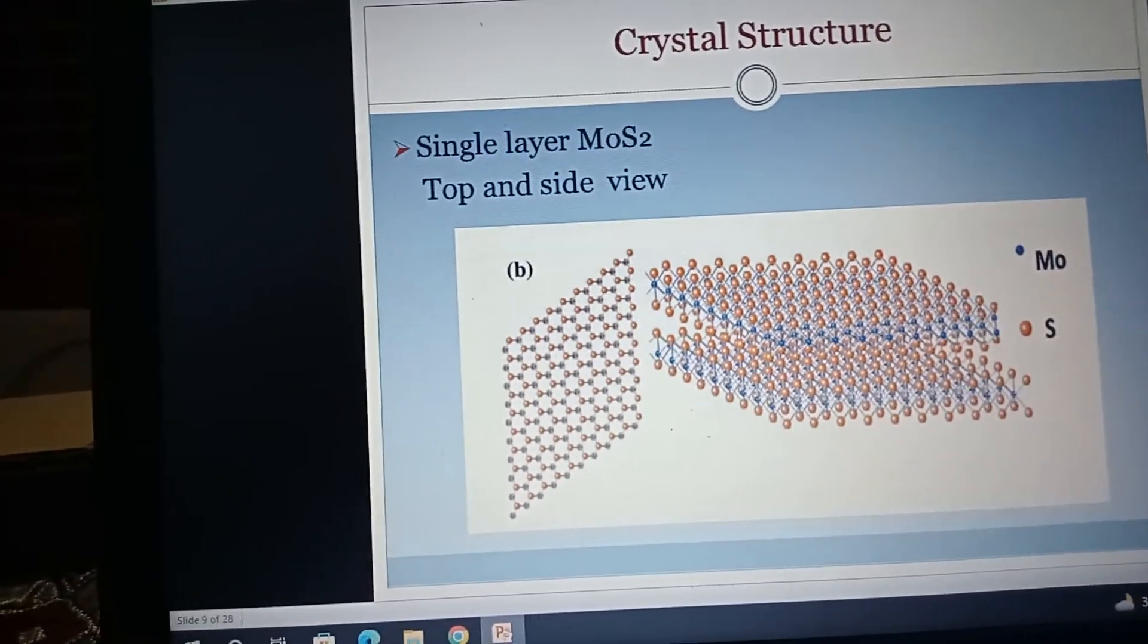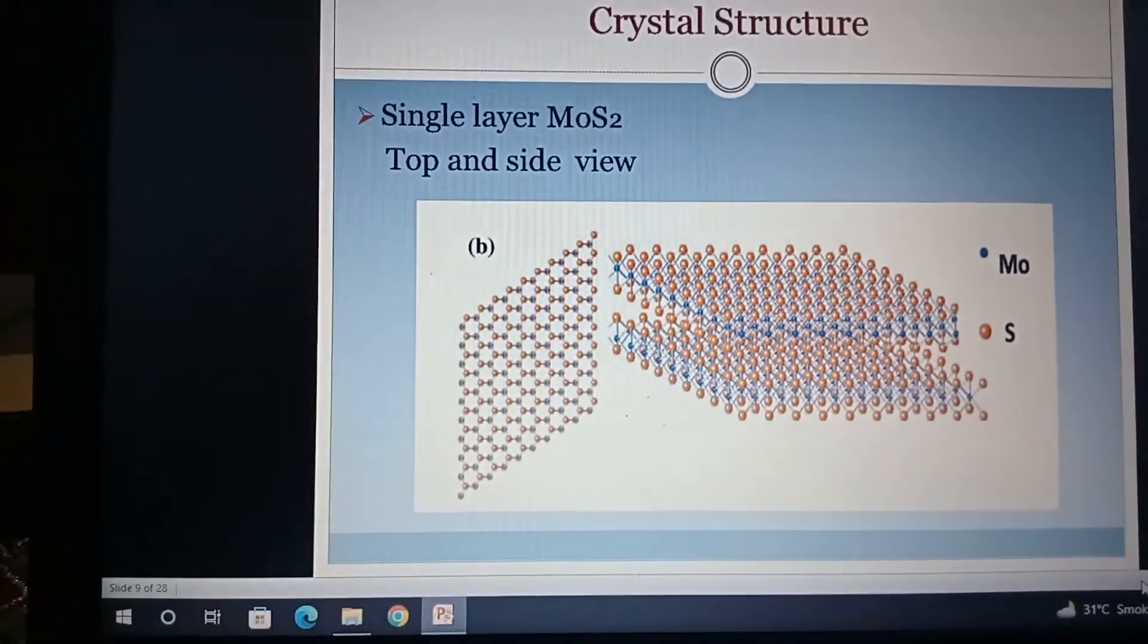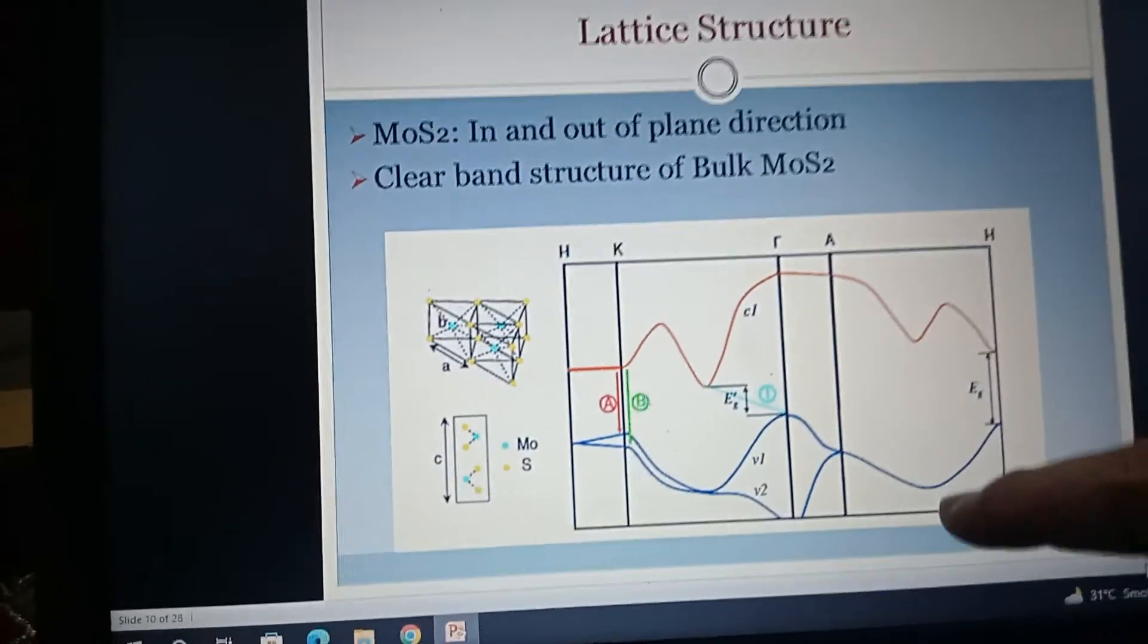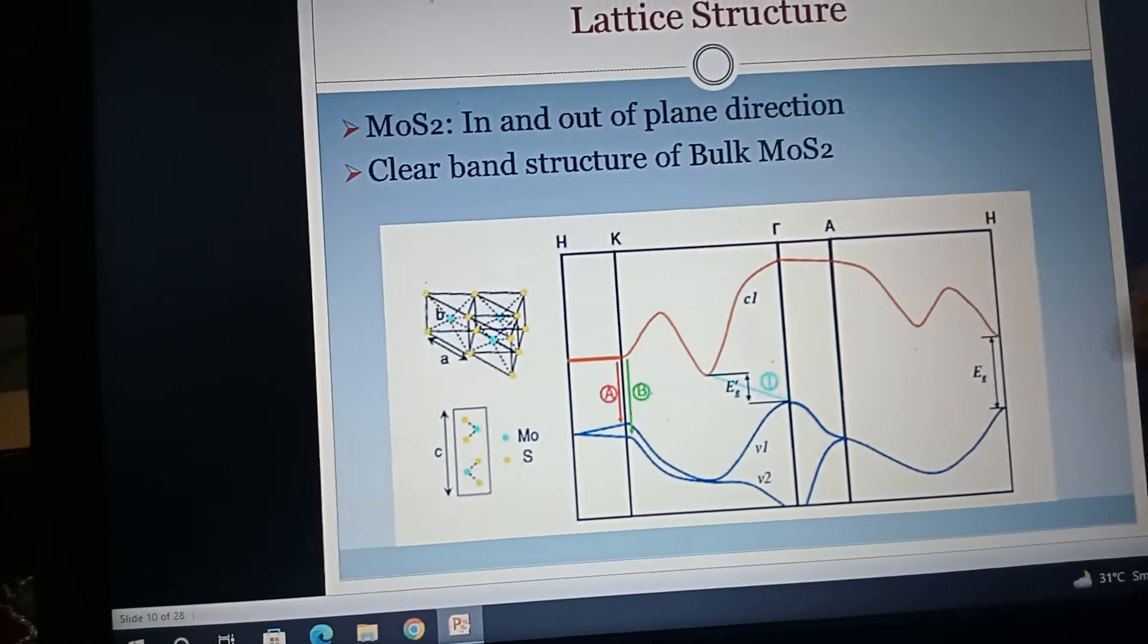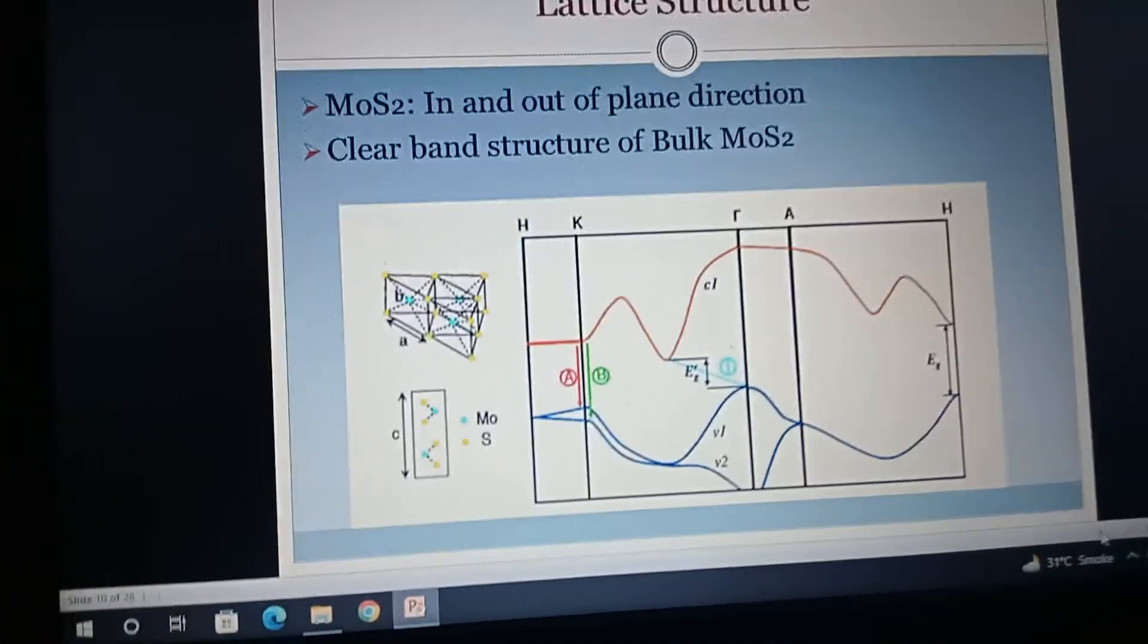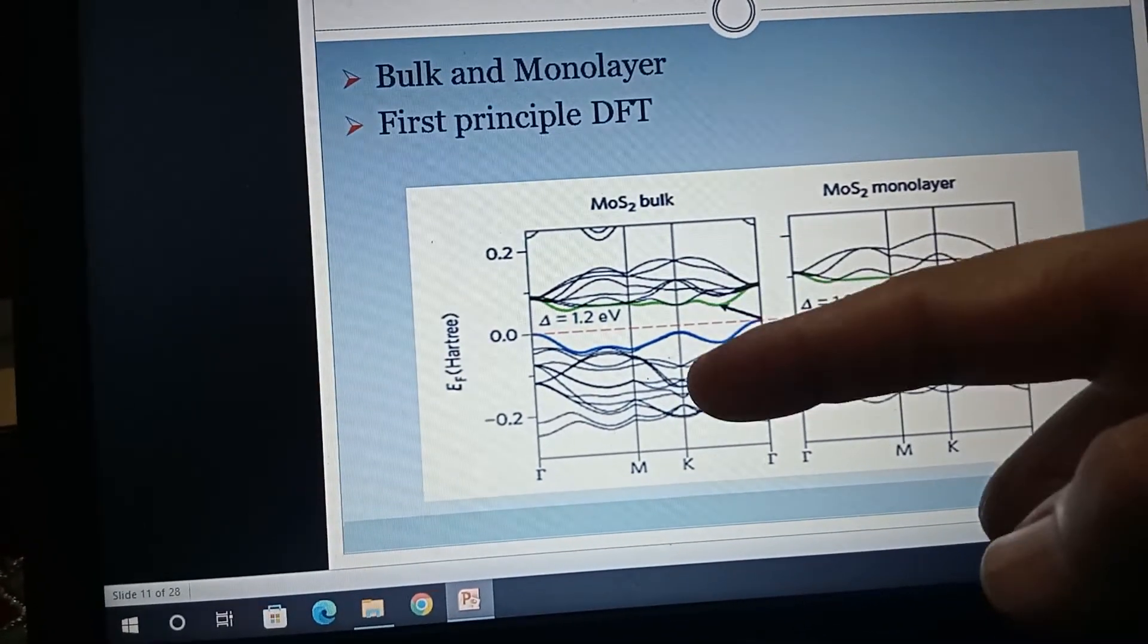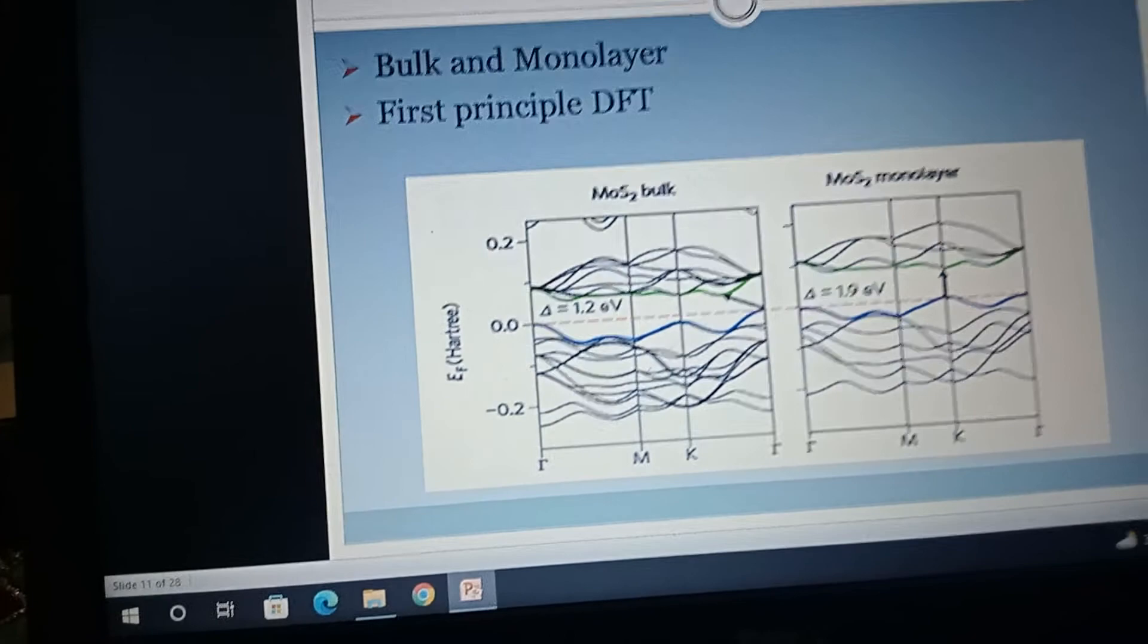Single layer top and side view. MoS2 in and out of plane direction, its energy band structure gives a clear band structure. You can see band gap, symmetry points in the gap. You can see here indirect band gap. Easy representation of band gap in bulk and monolayer. MoS2 in bulk has band gap 1.2 electron volts, and MoS2 in monolayer has band gap 1.9 electron volts. This is an important question which is asked from the reviewer.